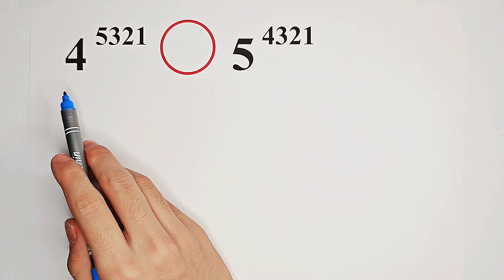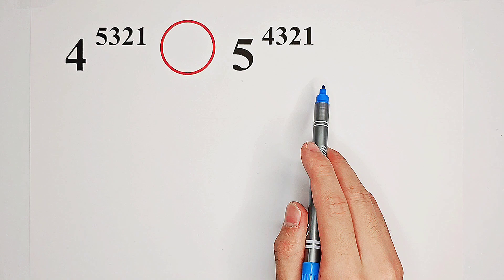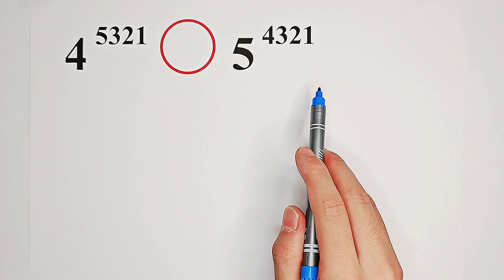Which is greater, 4 to the power of 5,321 or 5 to the power of 4,321? There are such huge numbers. So what shall we do?